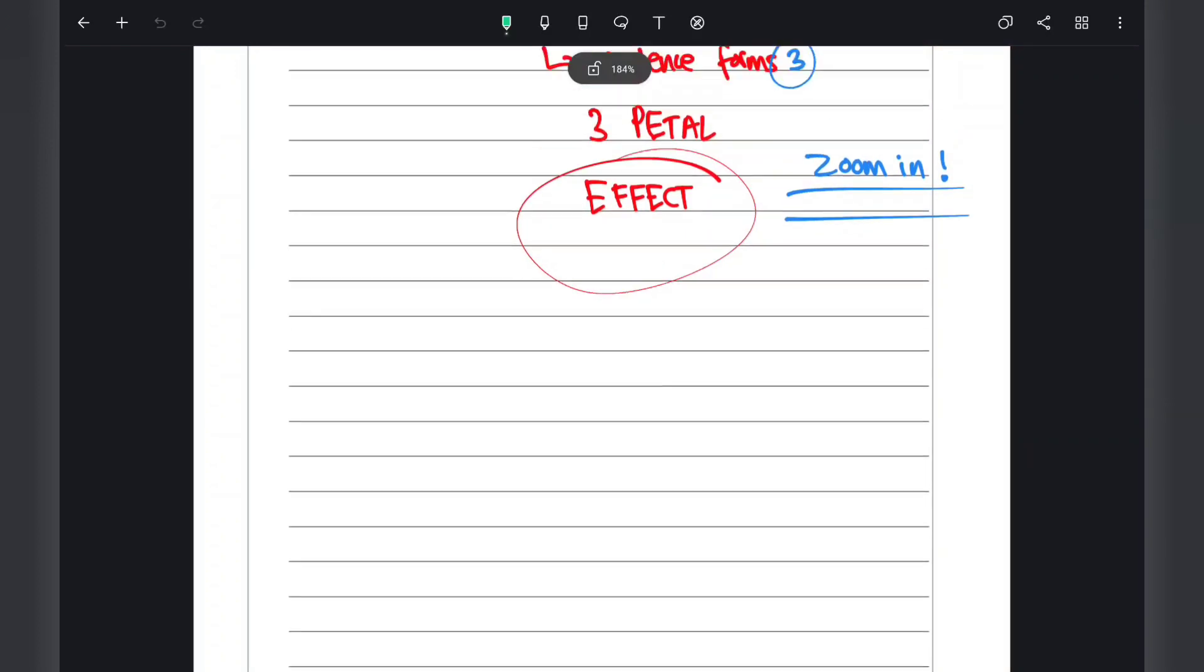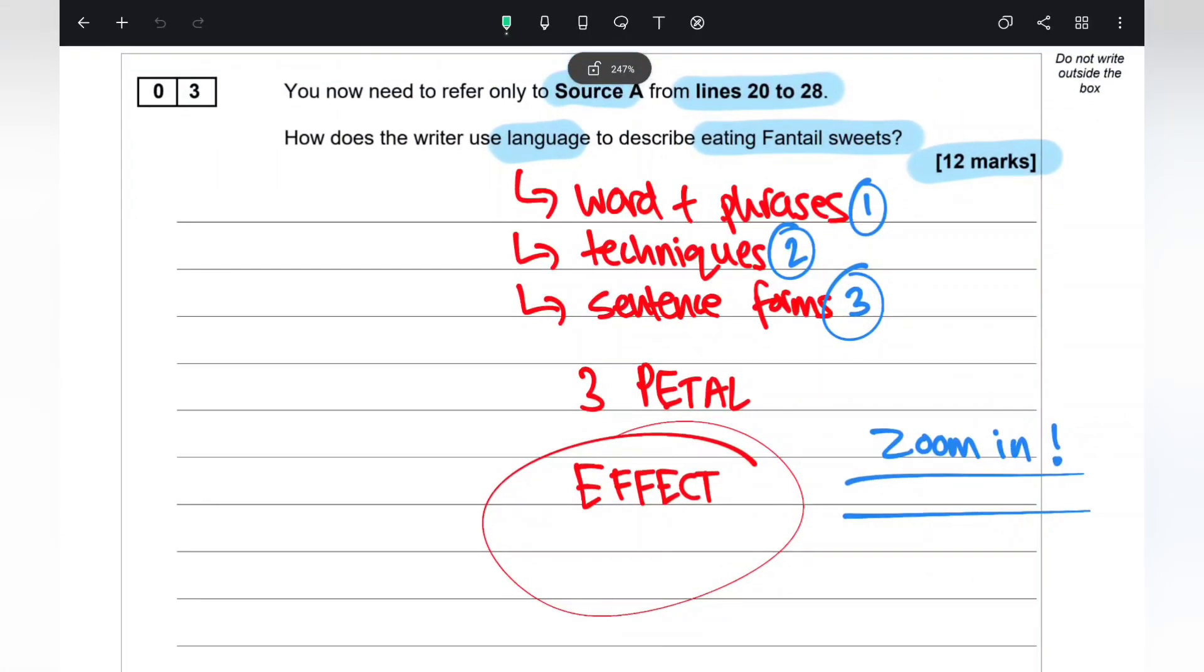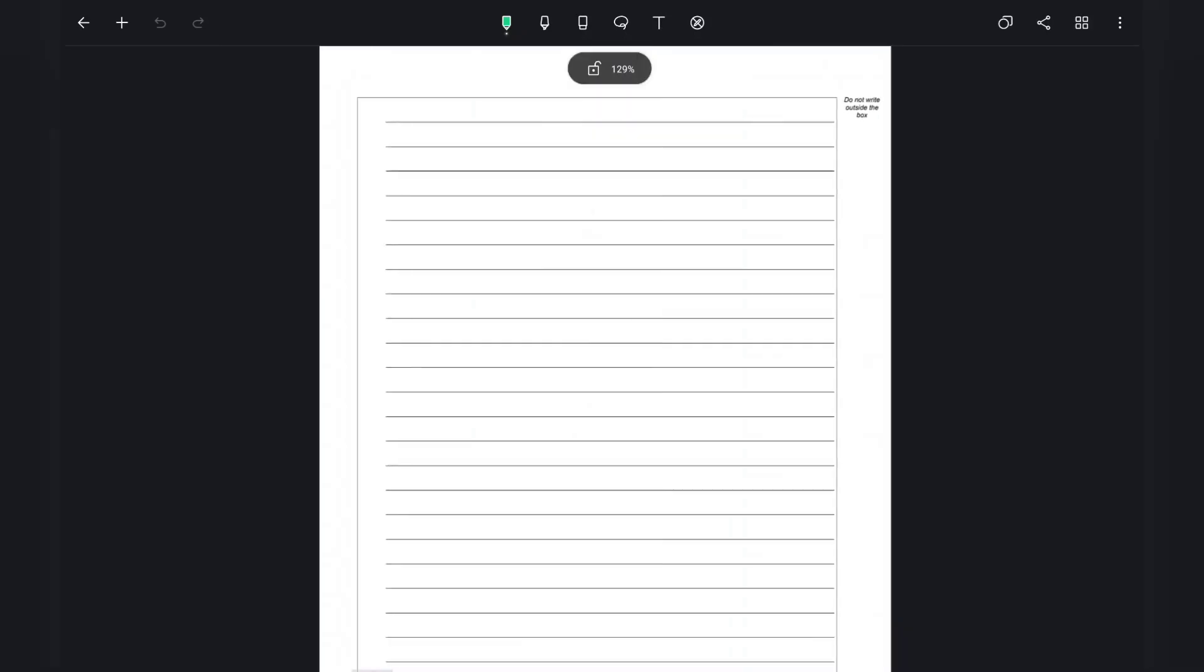Question 3—fortunately, this question is not new to you. You've done something similar in Language Paper 1. It's the language analysis question worth 12 marks. Aim to write three PETAL or PEEL paragraphs. Remember to zoom in: look at a particular word, its connotations, and how it helps answer the question. To score top marks, look at the effect—why has the writer used this particular technique? That's how you score top marks.